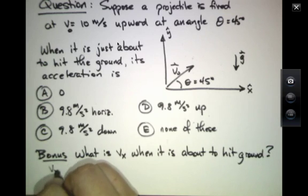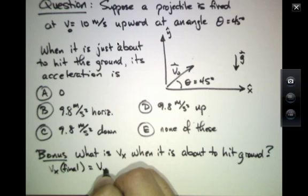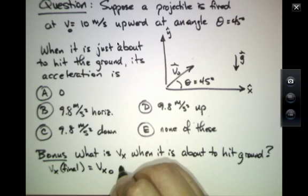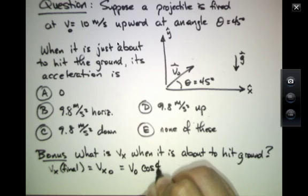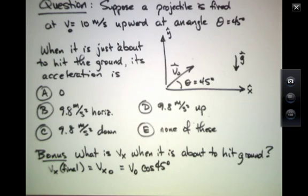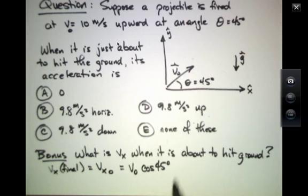So vx final equals vx naught, which equals v naught times cosine of 45 degrees, because this velocity vector is pointing off at 45 degrees.